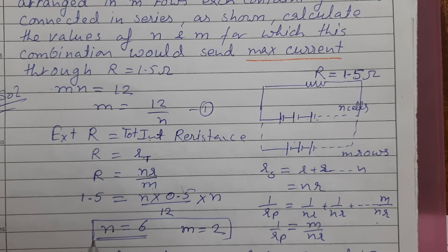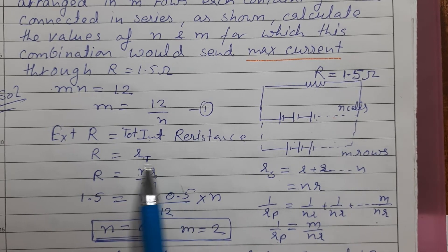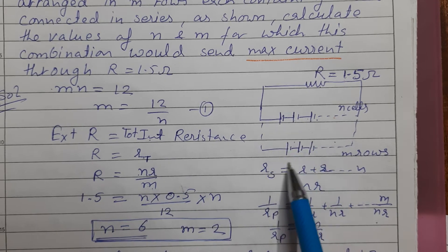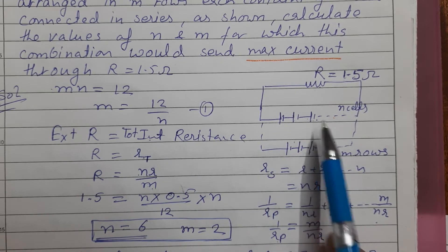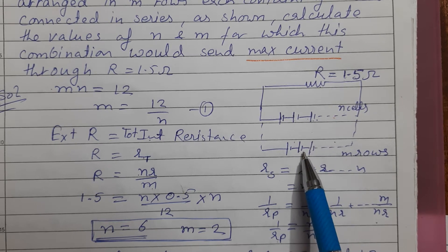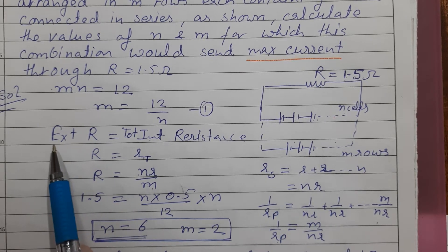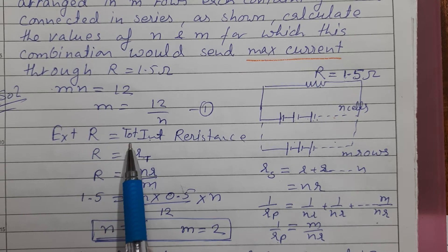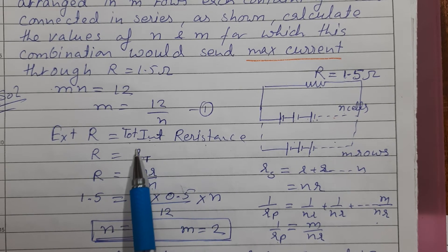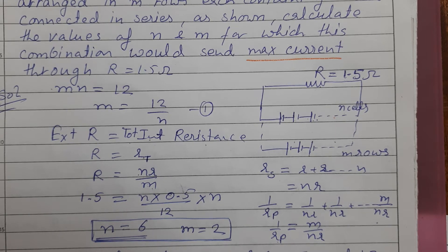So N equals 6, and since M equals 12 by N, M equals 2. These are the answers for this circuit. The condition used was for a mixed series-parallel combination: external resistance must equal total internal resistance for maximum current.